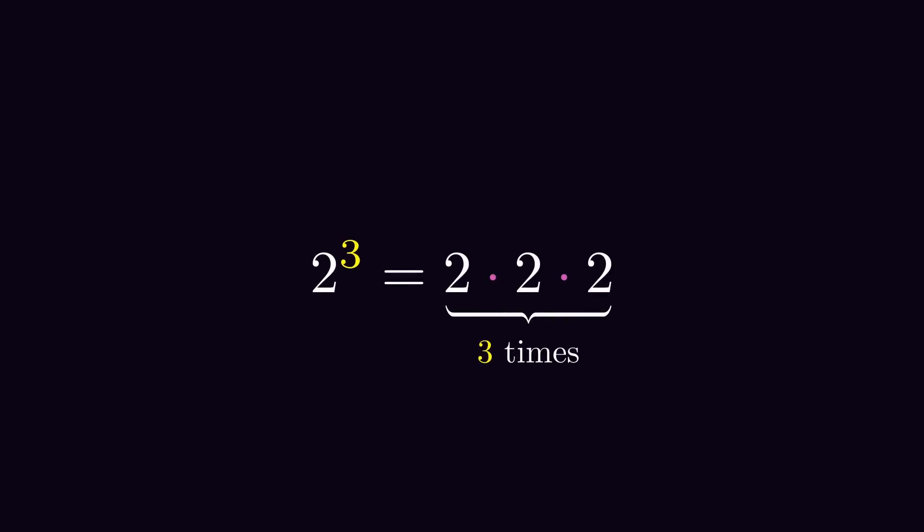How can you for example multiply 2 by itself 2 and a half times? Now, something very similar to exponentiation is the factorial. The classical definition is that n factorial is the product of the first n natural numbers. But similarly to exponentiation, we can extend the domain of the factorial.